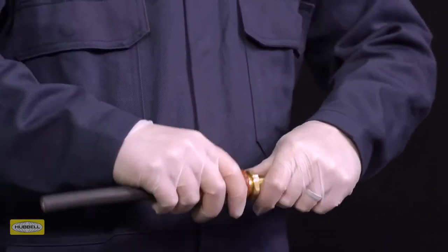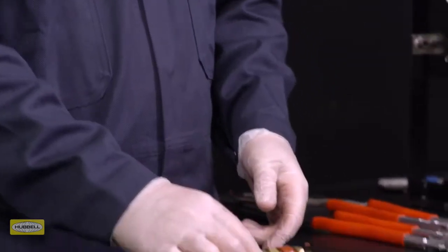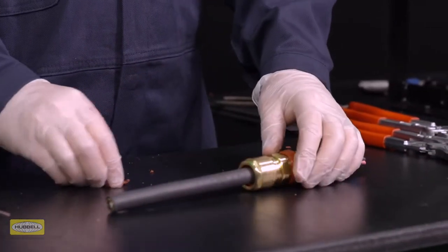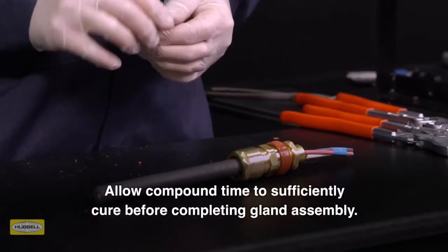Screw up the gland hand tight. Roll the surplus compound and seat it on the cable.